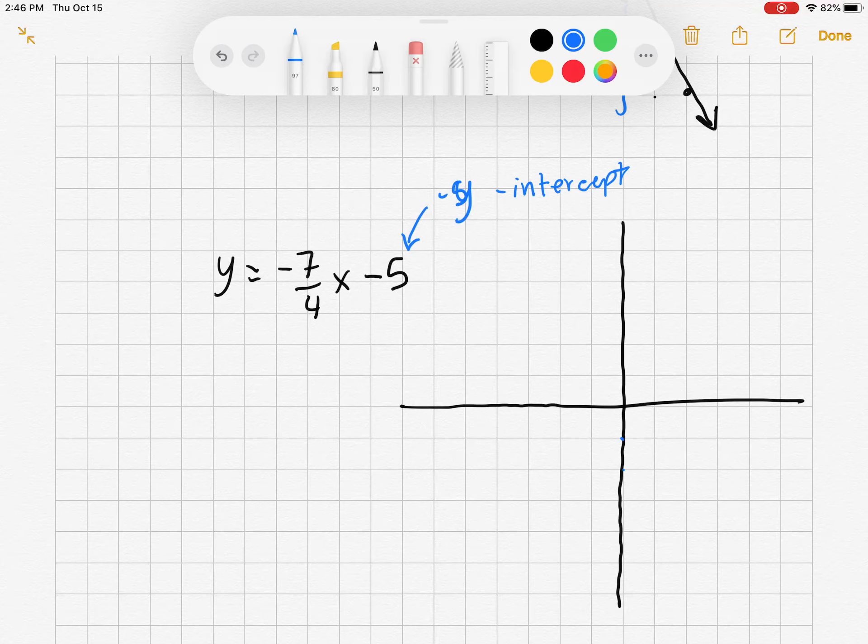So we start 1, 2, 3, 4, 5 right there. Now we have our slope negative 7 over 4. Going down 7 doesn't seem like the best idea. So let's go up 7.